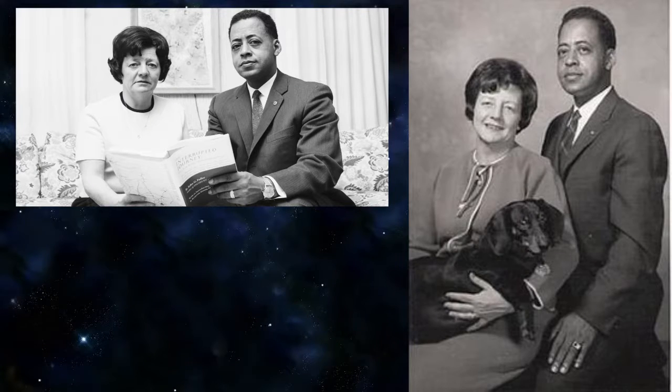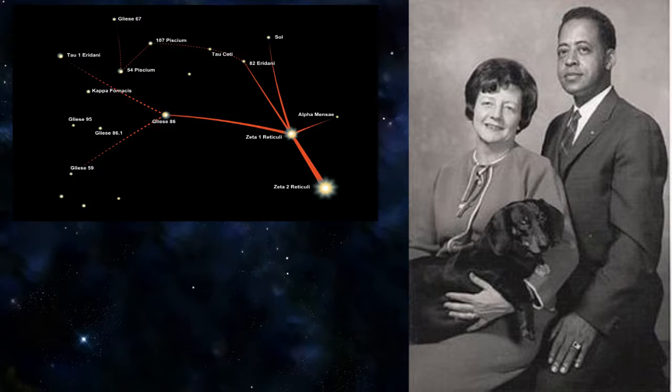One of the most well-known cases of abduction is Betty and Barney Hill, in which the greys took Betty and Barney on board their spaceship where they performed experiments and then, after the event, provided them with a star map of their original location, which Betty was able to draw under hypnosis.